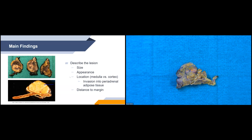Main findings will describe the lesion: size, appearance, and location — whether it's in the medulla or the cortex. A pheochromocytoma arises from the medulla, with its epicenter located within the medulla. An adrenal cortical adenoma arises from the cortex, with its epicenter in the yellow cortical area. We'll also mention any invasion into the periadrenal adipose tissue and the distance to the margin.